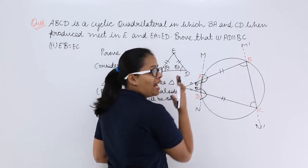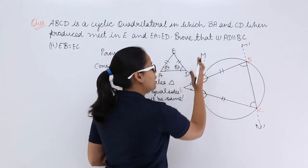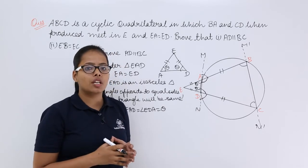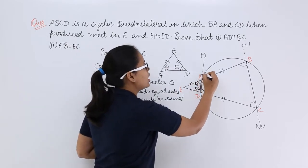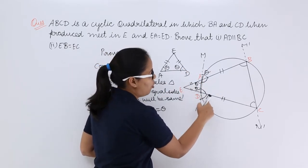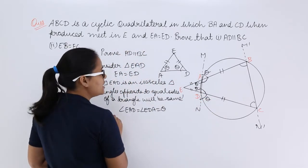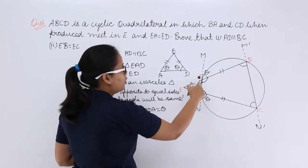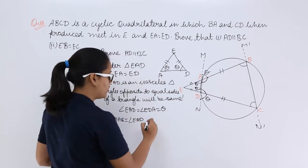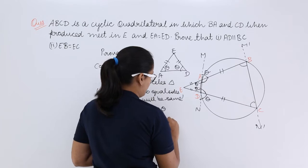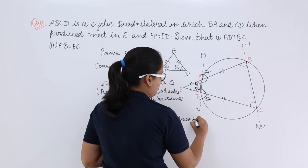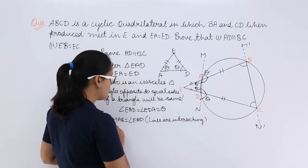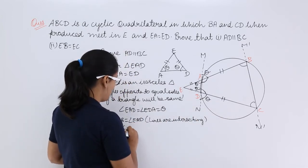Since ABCD is a cyclic quadrilateral, consider the line AD joining A and D. When you extend line EAD in both directions, you can see it intersects line EB. When two lines intersect, their vertically opposite angles are equal. So angle MAB equals angle EAD equals theta, and similarly angle NDC equals angle EDA equals theta.